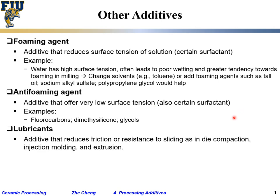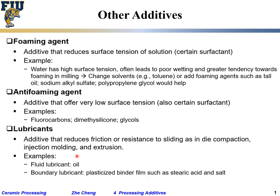For lubricants: to reduce friction or resistance to sliding in the die. That's typically added for processes such as extrusion or injection molding. Examples include oil, mineral oil, stearic acid — we would add it for dry pressing to lubricate the die so that we can release the pellet easily.